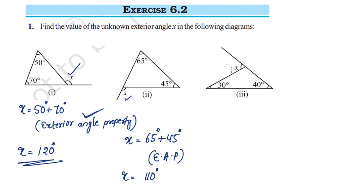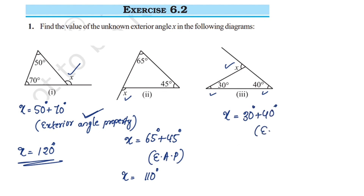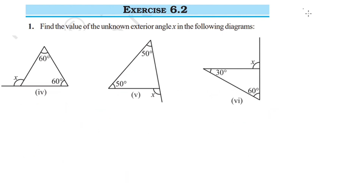This is the exterior angle, and these are the opposite two interior angles: 30 and 40. X is equal to 30 degrees plus 40 degrees. Using the exterior angle property, x is equal to 30 plus 40, which is 70 degrees.